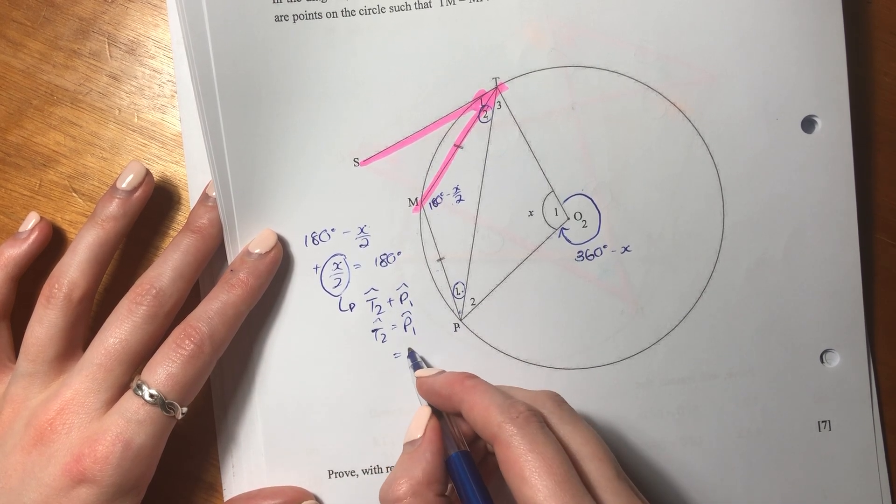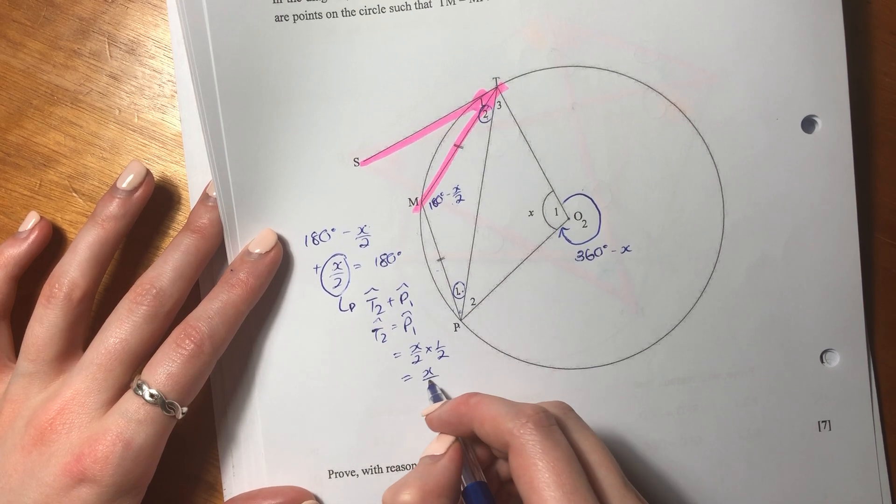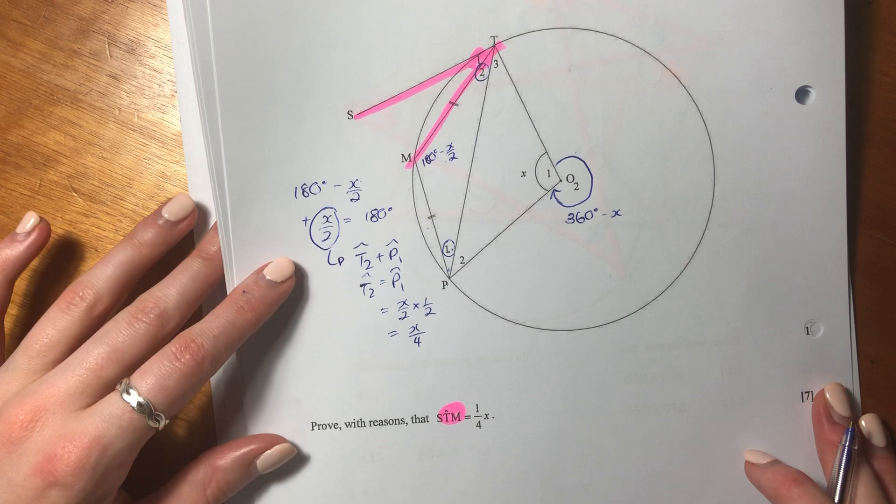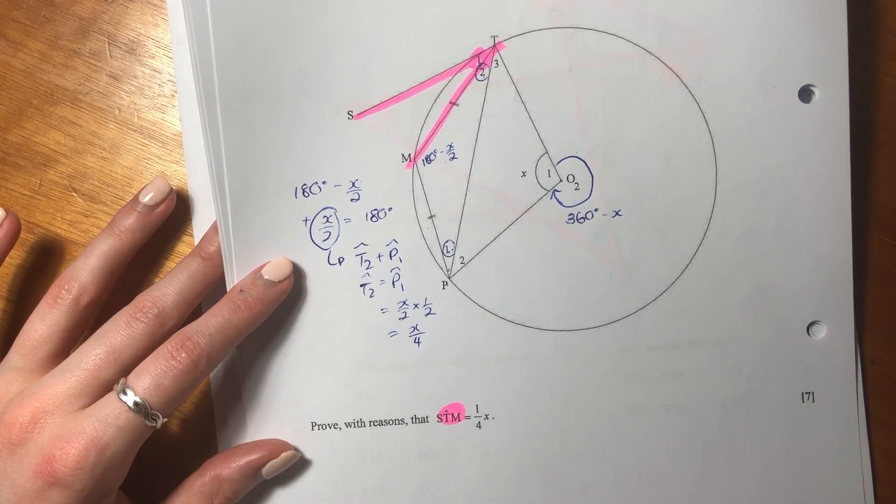Therefore, that equals X over 2 times a half, which is X over 4. So you should be following that logic. It's all about angles in a triangle.